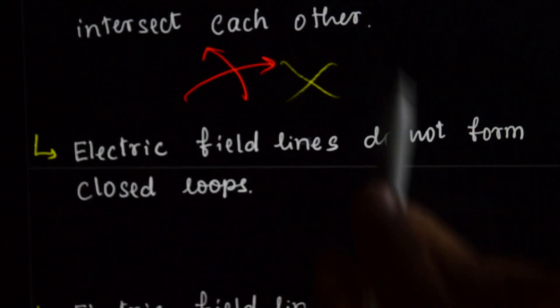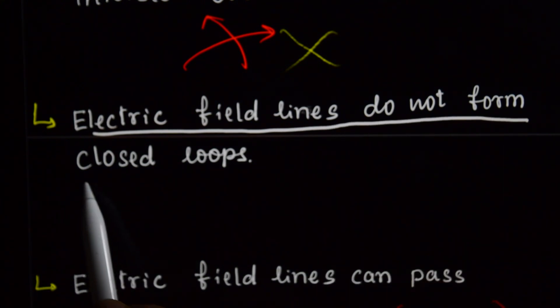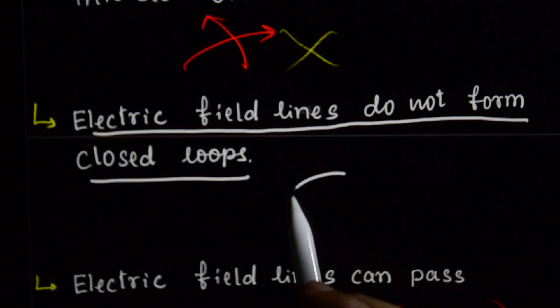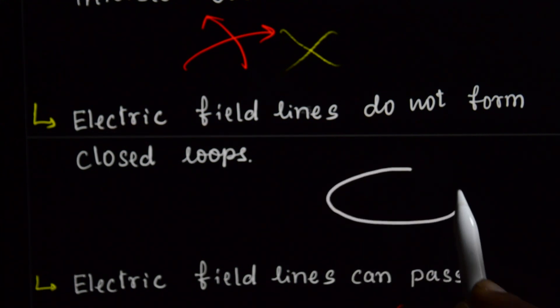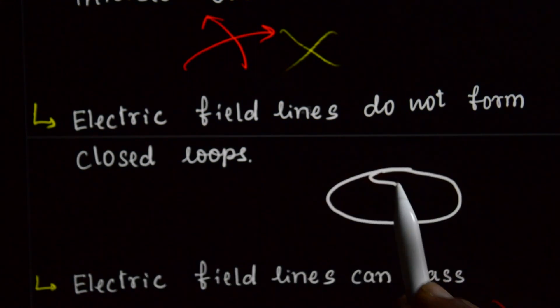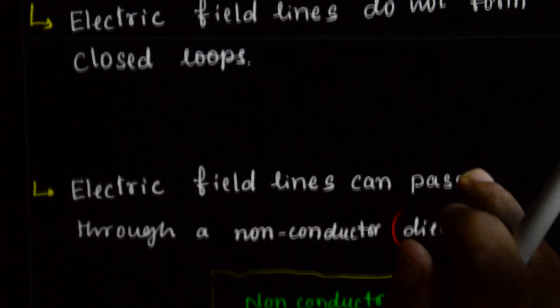And the third property. Electric Field Lines do not form closed loop. Here like this. Electric Field Lines do not form a closed loop, it is closed loop formation. That is third property.